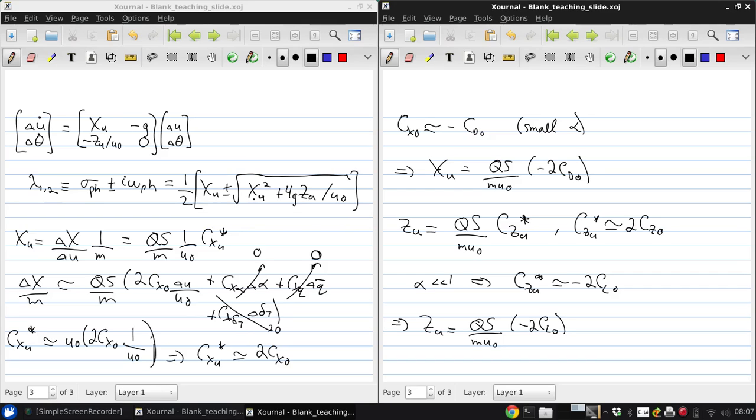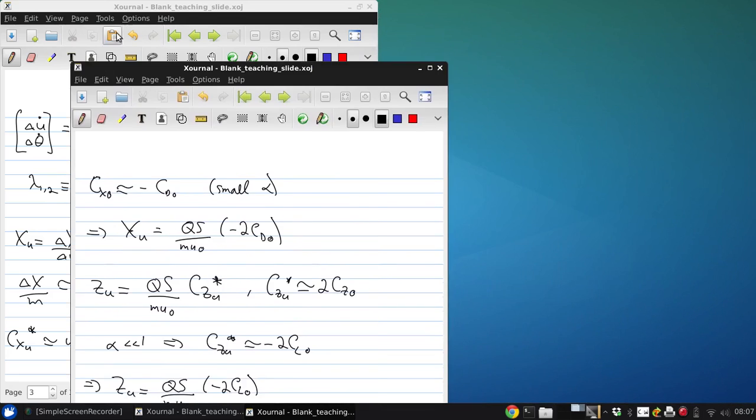So now these stability derivatives which appear in our fugoid mode are simply given in terms of the lift and drag coefficients of our aircraft at the trim state.